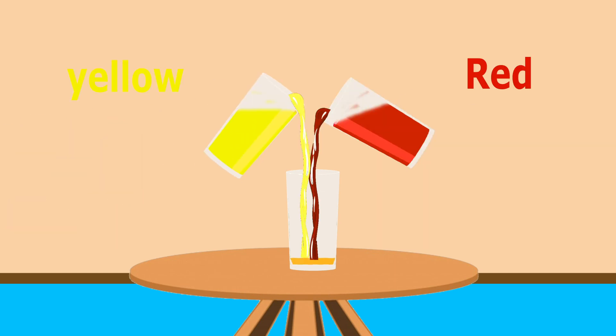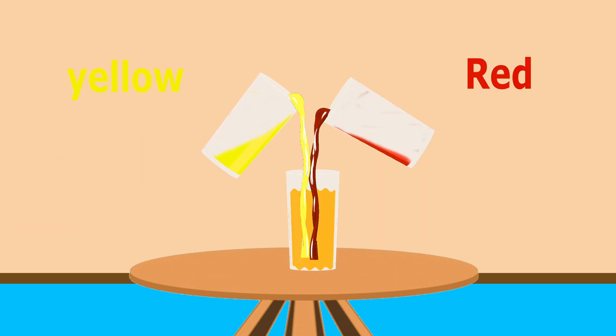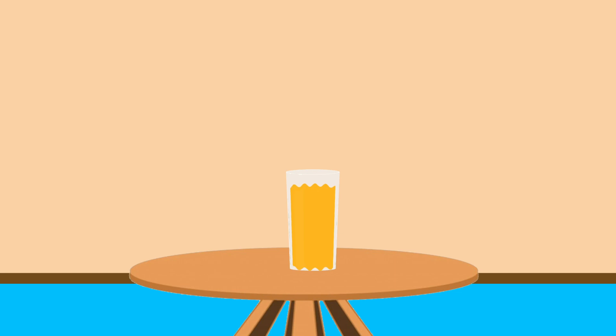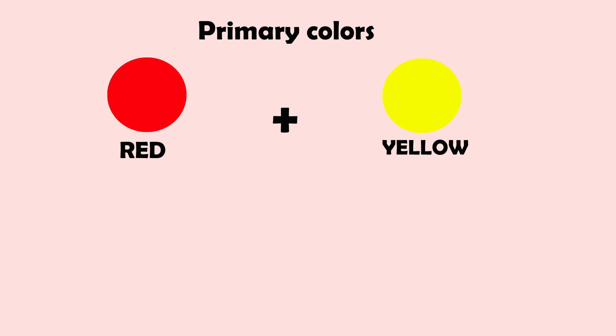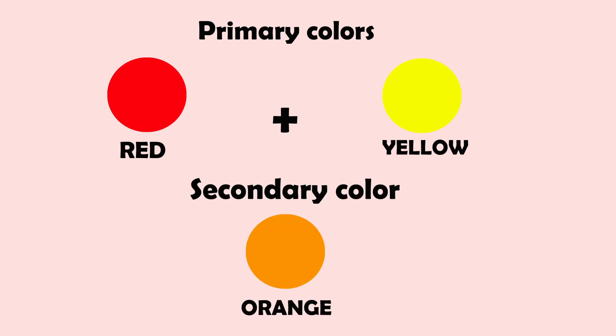Now first, we mix red and yellow juice together. Wow, it becomes orange juice! When we mix two primary colors, red and yellow, it becomes secondary color orange.